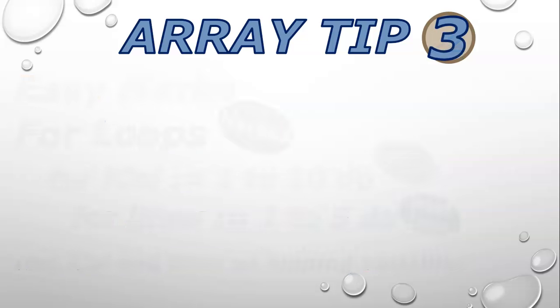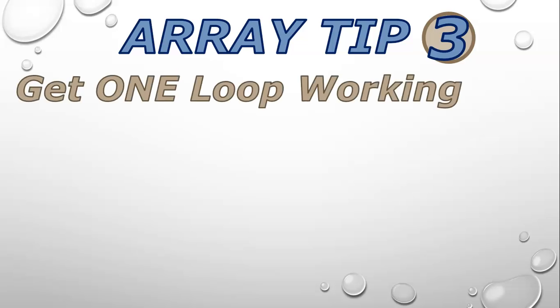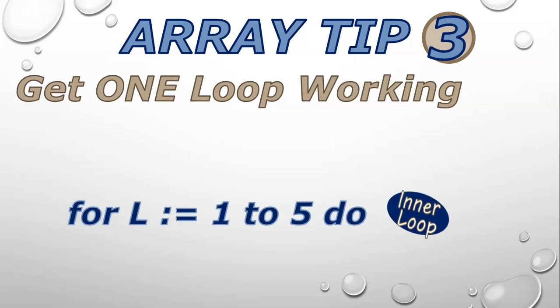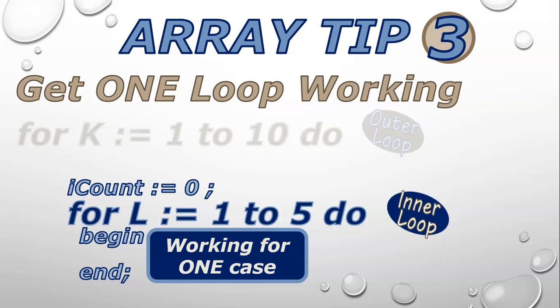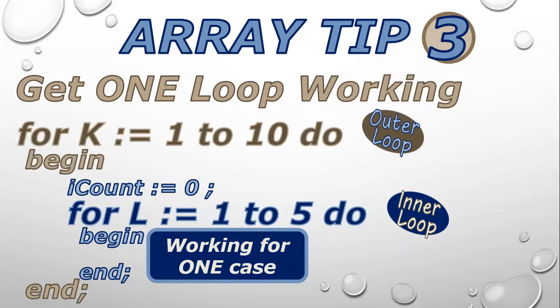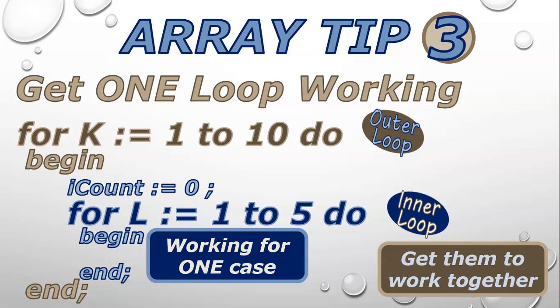Array tip number three: make sure that you get one loop working — your inner loop — for one case. For example, loop from 1 to 5. Maybe you need to initialize something or do some code within a begin and end. If you are doing a calculation over multiple rows, get one row's values working. If you're doing the display, get one row of the display working. Once you've got that working, put your outer loop around that code with a begin and end around everything that works for the one case. If you can't do that last step, it's probably only one or two marks — you'll get the majority of marks just by getting one case working.